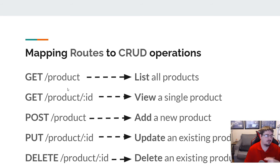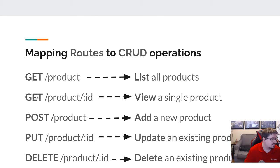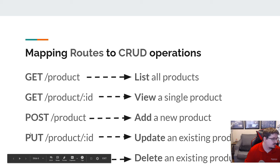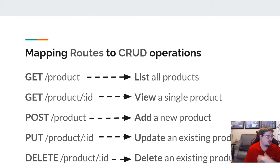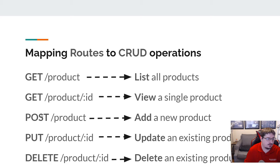One thing to keep in mind: when I open a page in a browser and just type it into the address bar, what method does it send? GET — it just goes in as GET. So if I want to test the POST, PUT, or DELETE routes, we're going to need to use another tool to test those routes. We can actually use that tool to test all of these.